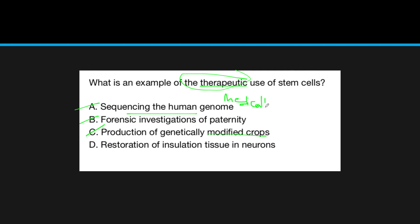Production of genetically modified crops? Stem cells can occur in many different organisms such as humans, which are not plants, so no. And therapeutic here is usually medically related, so the production of genetically modified crops makes no sense. The answer is genetic restoration of insulation tissue of neurons. You'll notice here restoration of tissues is mainly what stem cells are used for because they're able to differentiate into all these different things.